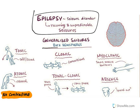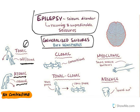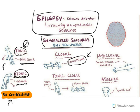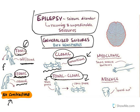Generalized seizures occur in both cerebral hemispheres. Tonic seizures mean tonicity — stiffness — all the muscles will become stiff. Atonic means there is no stiffness, no tonicity, all muscles are relaxed. In both conditions the subject will fall due to either complete contraction or complete relaxation of muscles. Clonic is characterized by convulsions. Not all epilepsy types have convulsions — only clonic and tonic-clonic have convulsions. Tonic-clonic means there is a combination of tonic — too much contraction — and clonic convulsions.